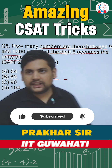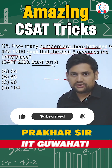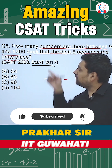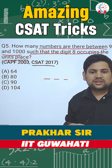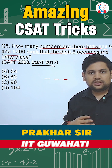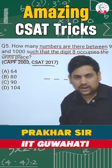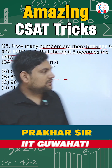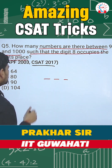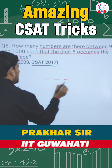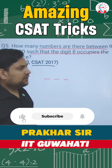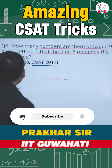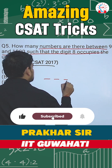Now, between 99 and 1000, all the numbers will be of 3 digits. So I make 3 slots like this. Now 8 occupies the units place.